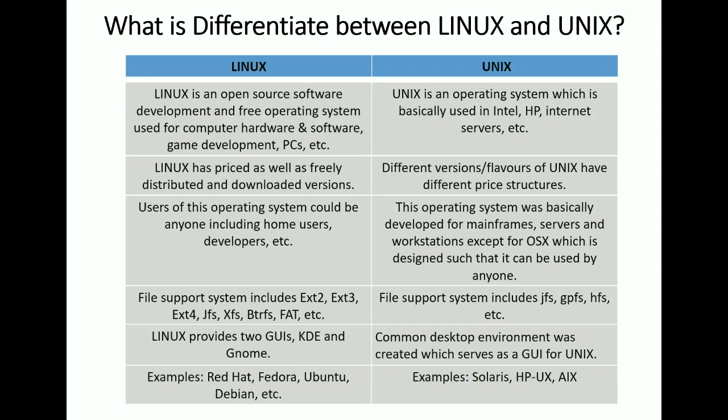Examples of Linux operating systems include Red Hat, Fedora, Ubuntu, Debian, and others. Examples of Unix operating systems include Solaris, HP-UX, and AIX. These are the key distinctions you can provide if anyone asks you about the basic differences between Linux and Unix.